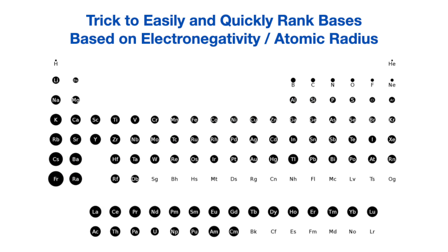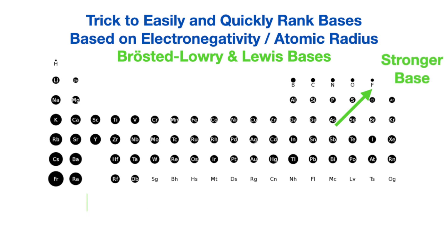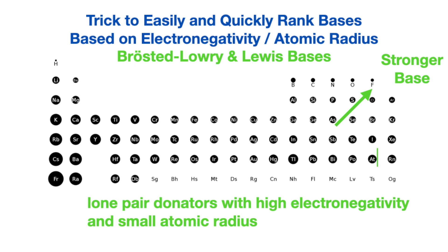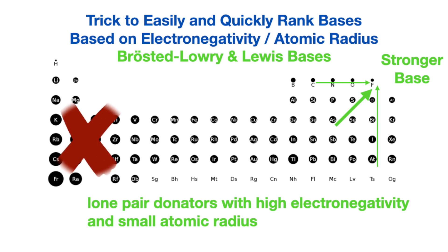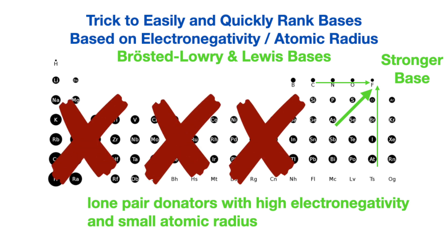A trick to ranking lone pair-donating bases is to look at the atom with the lone pair or negative charge — the closer to the top right corner of the periodic table it is, the stronger the base. This means going up in a group and going right in a period. Note that the metals on the left side of the periodic table are not included here because they're more likely to be lone pair acceptors, making them Lewis acids.